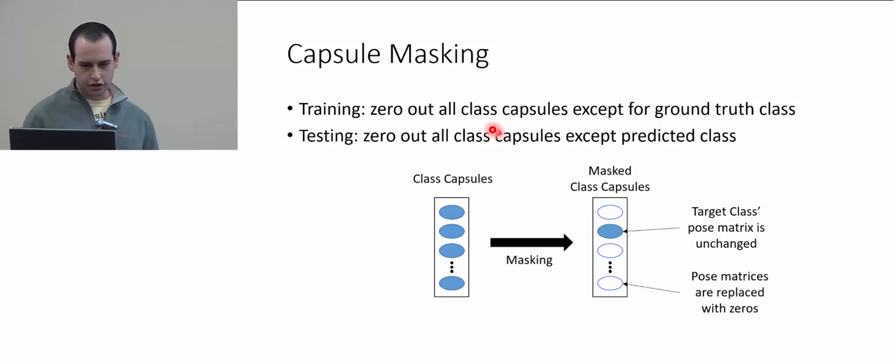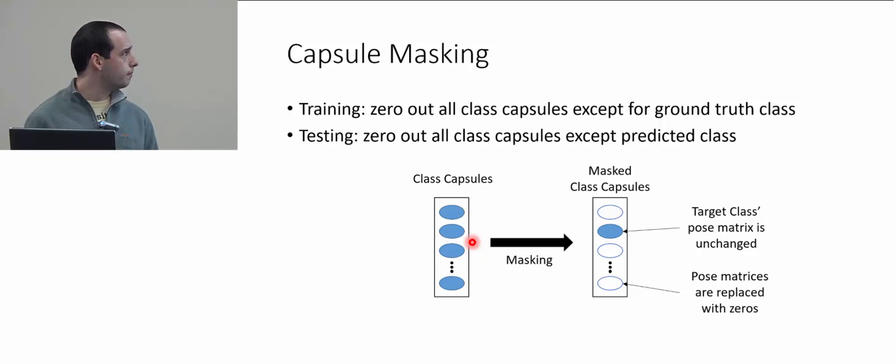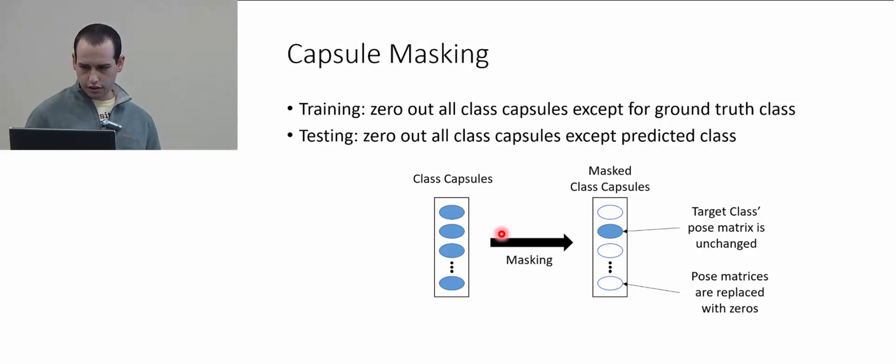For capsule masking, at training time all classes except the ground truth class are masked out, so the network learns class-specific information used for localization. At test time, since we don't have the ground truth, we use the predicted class — the class with the highest activation — and mask out everything else.